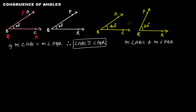Since they are not congruent, what will happen if you try to superpose angle PQR over angle ABC? Vertex Q will come here, and maybe even QR will cover it if the arms are equal, but this arm QP will go something like this. This is happening because the angles are different, so we say that angle ABC is not congruent to angle PQR.